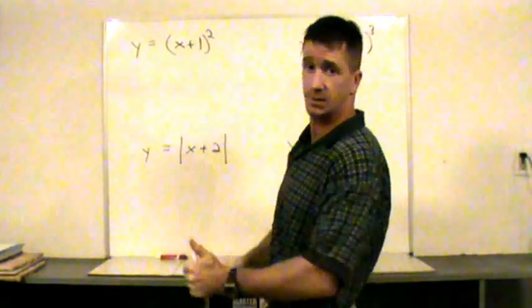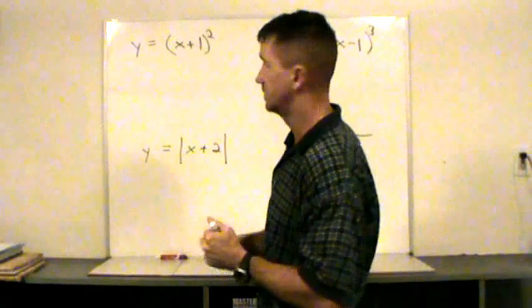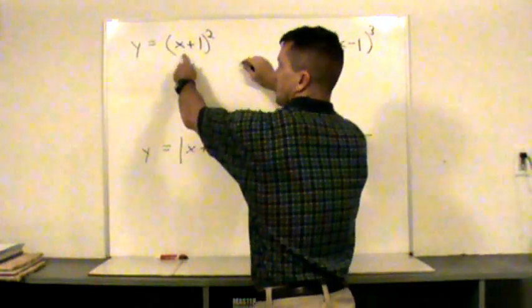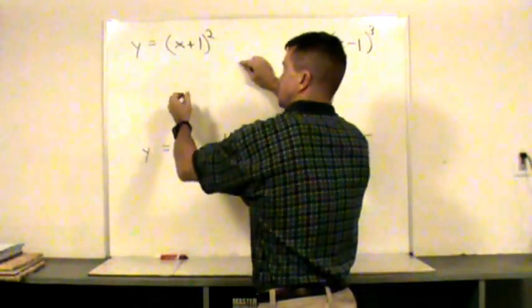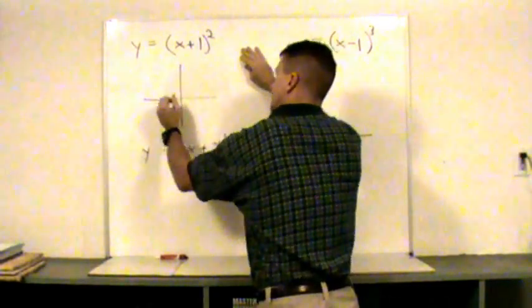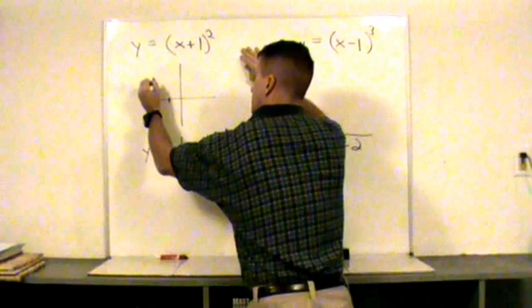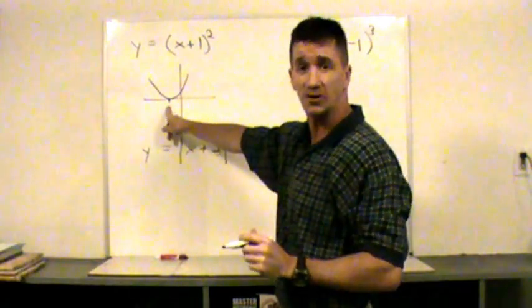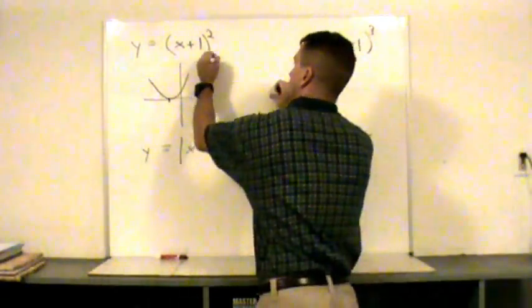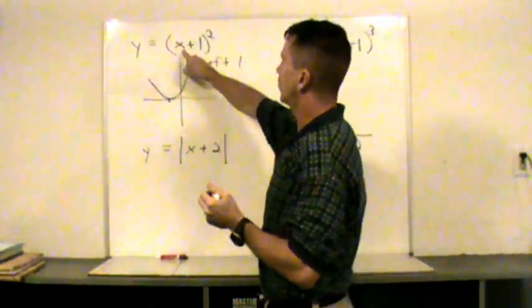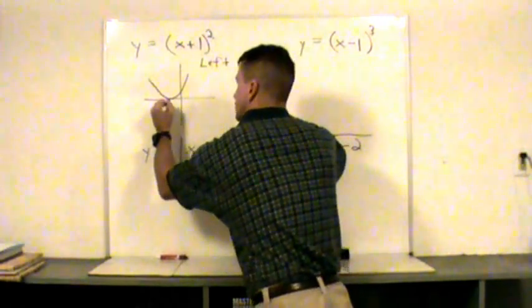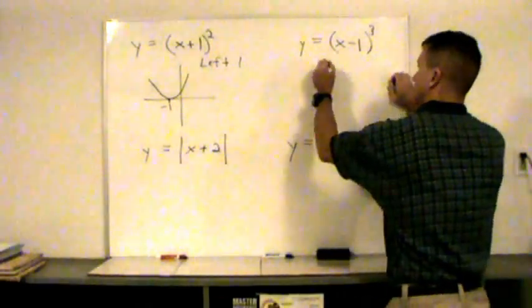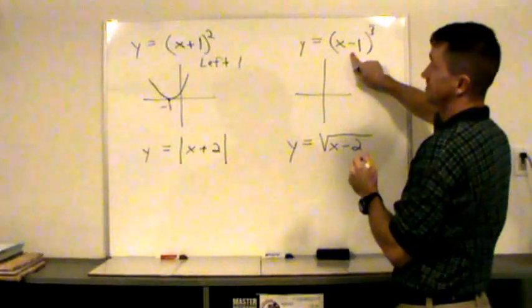I'll put x minus one cubed. I'll put everything inside the bars. Now we're talking about horizontal shifts, left and right shifts. Some students mistakenly think plus one is going to go to the right. Uh-uh. What x value substituted here makes this turn into a zero? Isn't it negative one? Negative one plus one equals zero. So this graph actually will shift one unit to the left.